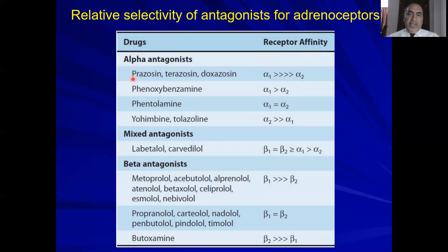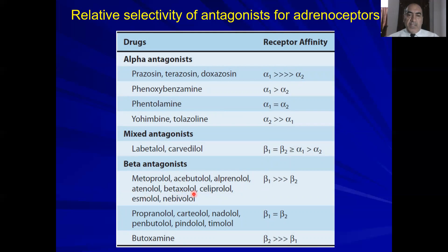Regarding receptor affinities, the three major classes of receptor blockers are: alpha blockers — selective ones such as prazosin, terazosin, doxazosin, and non-selective ones such as phenoxybenzamine and phentolamine — and alpha-2 blockers such as yohimbine. Labetalol is a mixed antagonist that inhibits both alpha-1 and beta receptors. Beta antagonists include selective ones such as metoprolol, acebutolol, and atenolol, and non-selective ones such as propranolol, timolol, and pindolol. Butoxamine is a selective beta-2 blocker not in clinical use.